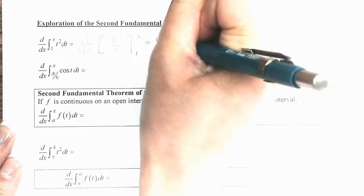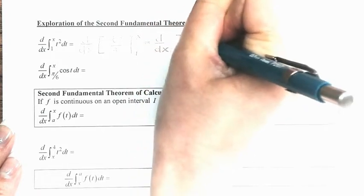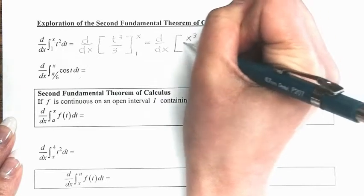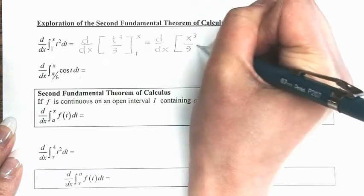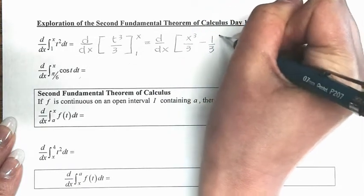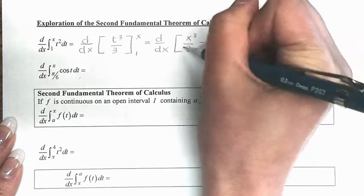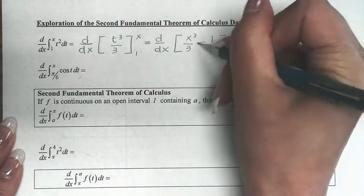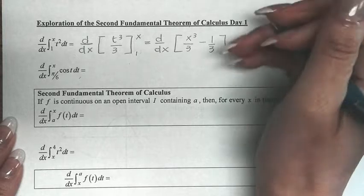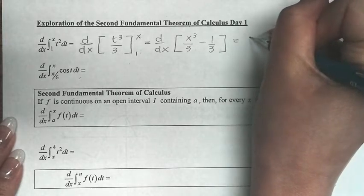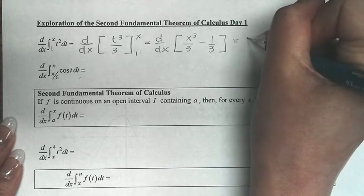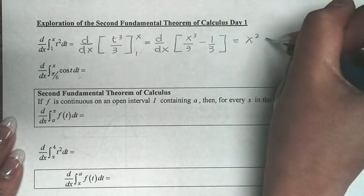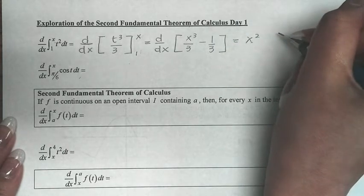Now I plug in x and 1, giving x cubed divided by 3 minus 1 over 3. At this point, I take the derivative of each of these terms. The derivative of the first term gives x squared, and the derivative of the second term is 0.